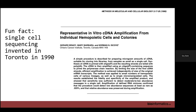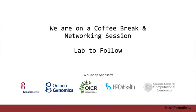Fun fact: there's a paper from 1990 published in Toronto that is actually the first single-cell paper — they just did one cell. Single-cell genomics was invented in one of the buildings near here and has been around for a long time.